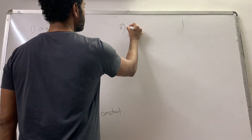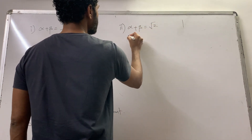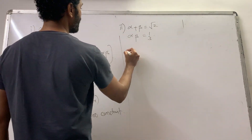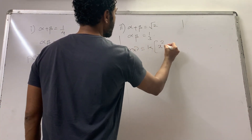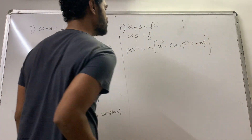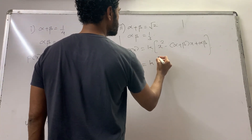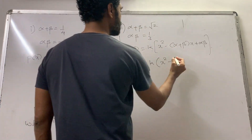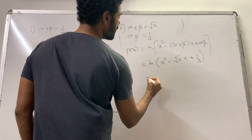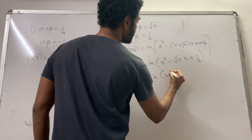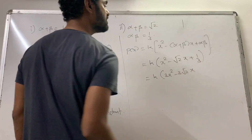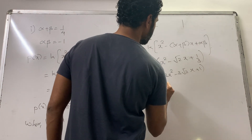In the second sum, sum of zeros = √2 and product of zeros = 1/3. The polynomial is K[x² − √2·x + 1/3]. Taking LCM: K/3 × [3x² − 3√2·x + 1]. So the required polynomial is K(3x² − 3√2·x + 1), where K is any non-zero constant. That completes Exercise 2.2.